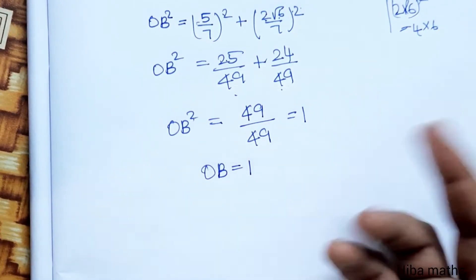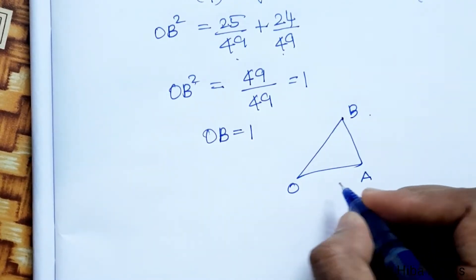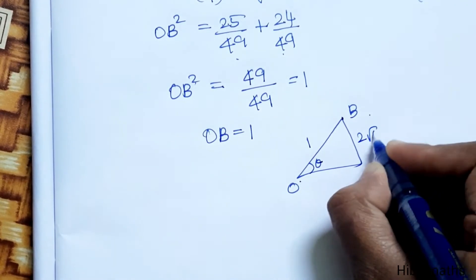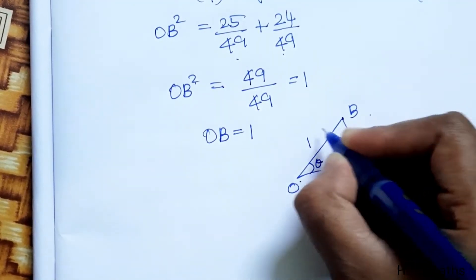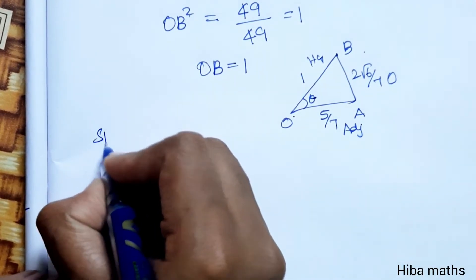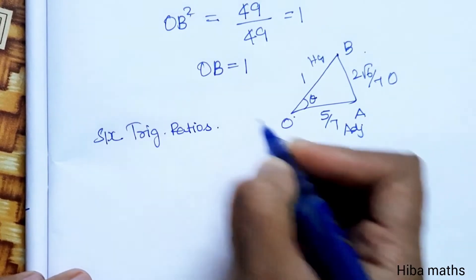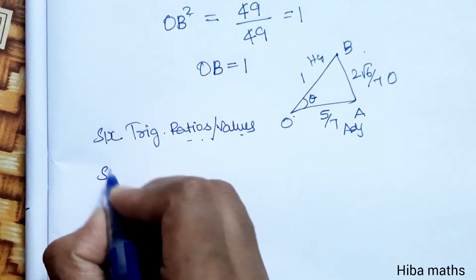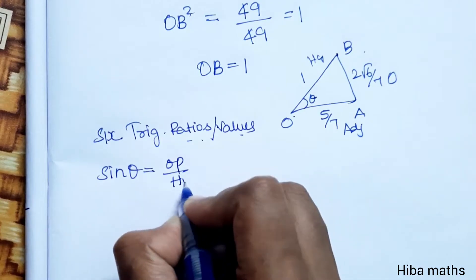Now we have all three sides: opposite side = 2√6/7, adjacent side = 5/7, and hypotenuse = 1. We can now calculate all six trigonometric ratios. Starting with sin theta, which is opposite divided by hypotenuse.